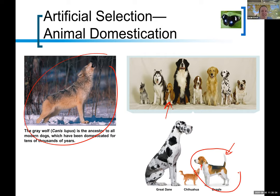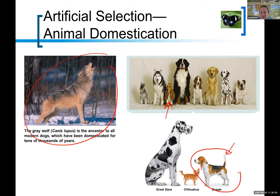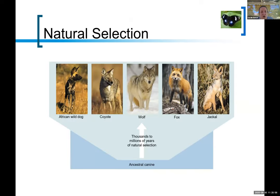Domestication is a type of selection, and that got Darwin thinking: in nature, do you have this similar kind of thing, but instead of people deciding which traits they want to see, does nature kind of do it on its own? Where some characteristics are favorable and some are not? And so that got him thinking about what we now call natural selection.